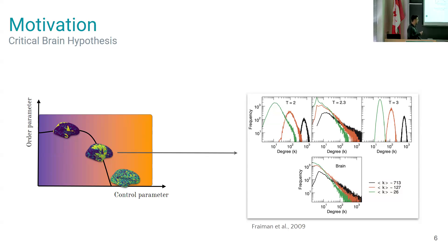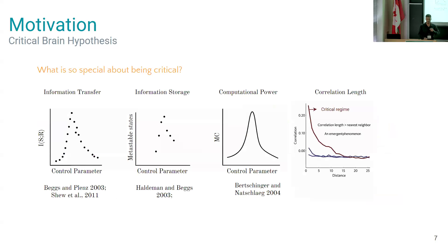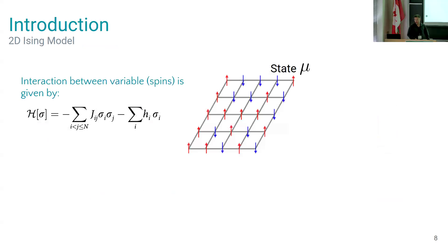It's really nice to be in the critical period because you have a maximum of information transfer, information storage, computational power, and also some emergent phenomena such as correlation length. You have an increase in correlation length spontaneously during the critical period.